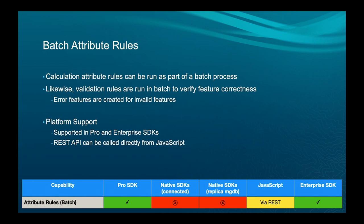Batch attribute rules are rules you can run as part of a batch process — calculation rules or validation rules. You can run them on a selection or on a difference query between your version and default. They're kind of a last stand to get data in a good state before you reconcile and post. Right now, these are only supported in Pro and Enterprise SDKs, though you can do it in JavaScript via REST.